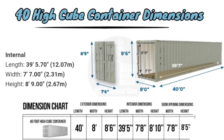40 high cube container internal dimensions are: length 40 feet, width 7 feet and 7 inches, height 8 feet and 9 inches. Door dimensions are also noted.